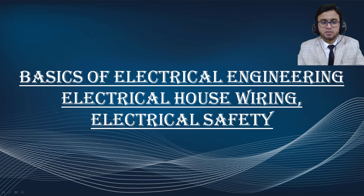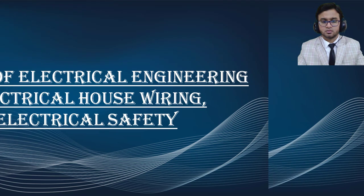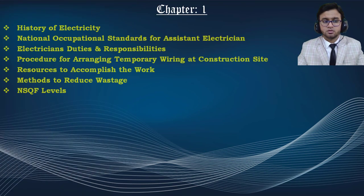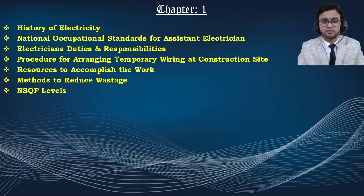So let me tell you why — this course is structured into 12 chapters. In the first chapter, you can find the history of electricity, where we are going to discuss the research and development done in the field of electricity. We also cover national occupational standards for assistant electricians, including the safety standards electricians are required to follow.